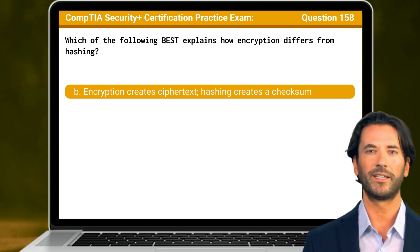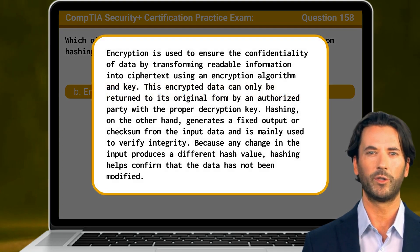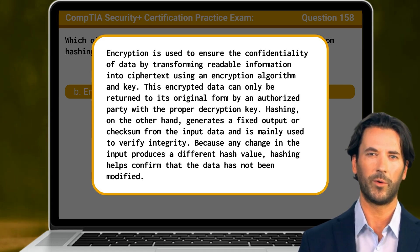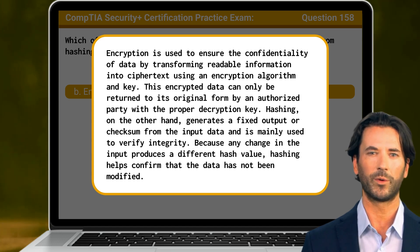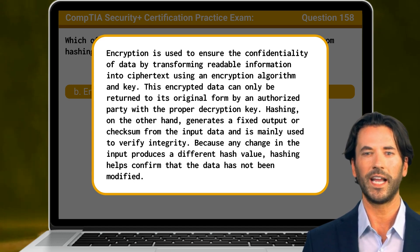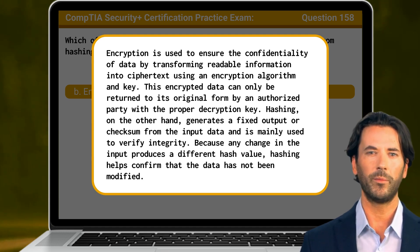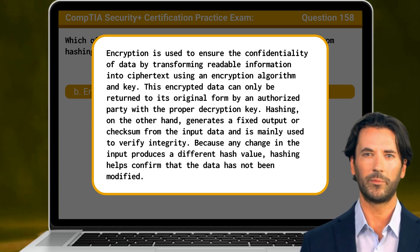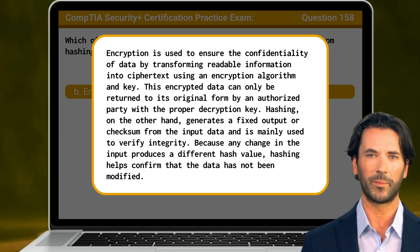Encryption is used to ensure the confidentiality of data by transforming readable information into ciphertext using an encryption algorithm and key. This encrypted data can only be returned to its original form by an authorized party with the proper decryption key. Hashing, on the other hand, generates a fixed output or checksum from the input data and is mainly used to verify integrity. Because any change in the input produces a different hash value, hashing helps confirm that the data has not been modified.